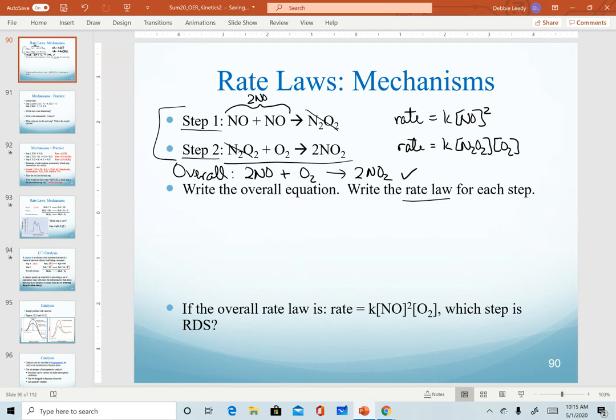Now notice the next piece of information we're given is a little bit different. Now we're told the overall rate law is this equation and we're asked to determine which step is the rate determining step. So in other words, we're now given this information. Remember from our previous video, we said that if the first step is slow, then the first step rate law will be the same as the overall rate law.